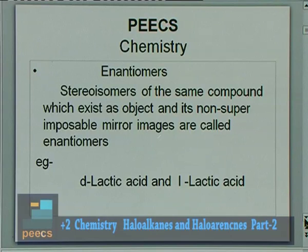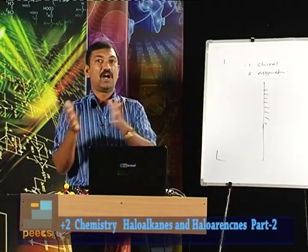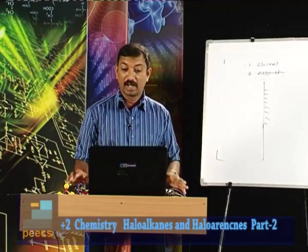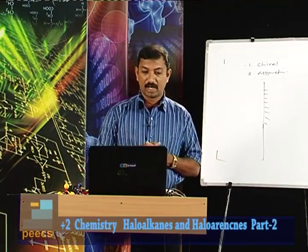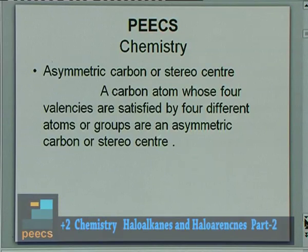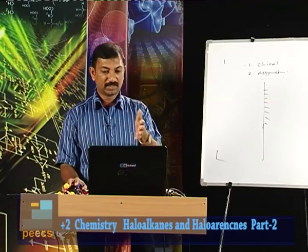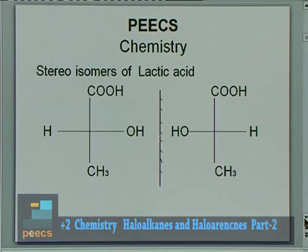Dextro lactic acid and levo lactic acid are enantiomers — one isomer rotates plane polarized light towards right and the other towards left. An asymmetric carbon atom, also called a stereocenter, is a carbon atom whose four valencies are satisfied by four different atoms or groups. These are the pictures of lactic acid showing the two enantiomeric forms.